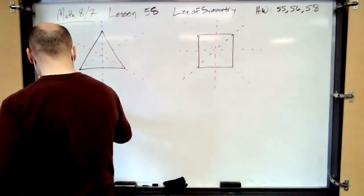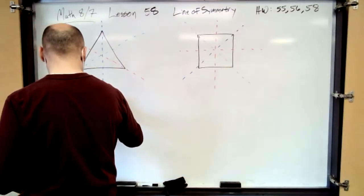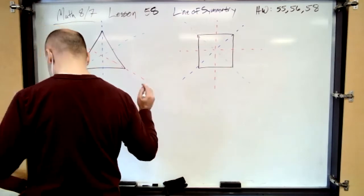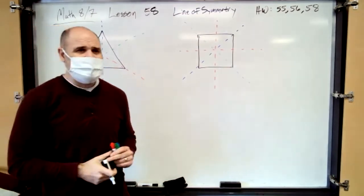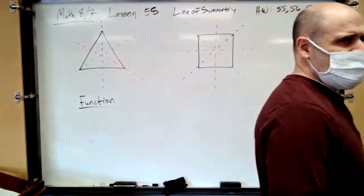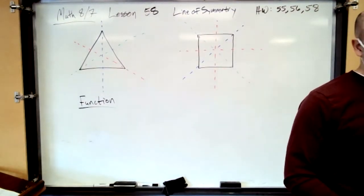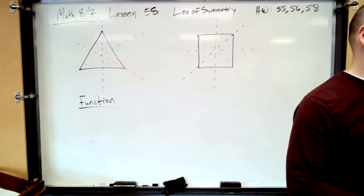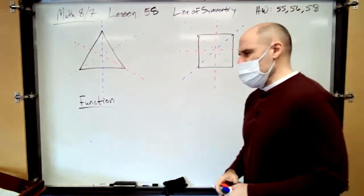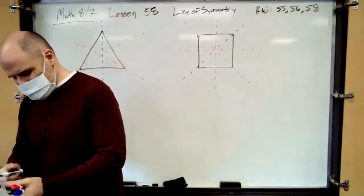Okay, now the next thing we're going to talk about is what's called a function, which is funny because it has nothing to do with these lines of symmetry. It's just what Saxon does. Every once in a while a line of symmetry was a concept that was pretty short and easy, so let's just fit in another concept. That's what they're doing here.